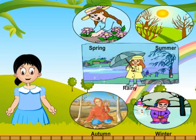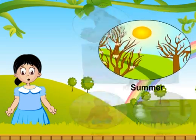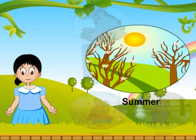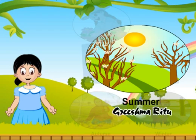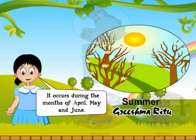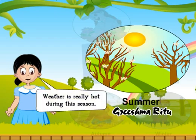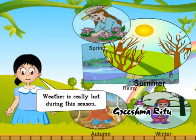The next season is Summer, or Grishma Ritu. It occurs during the months of April, May and June. The weather is really hot during this season.